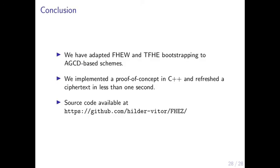Our bootstrapping procedure works as follows: we start with an AGCD encryption of m with large noise, use the mixed homomorphic multiplication of our GSW-like scheme to switch the modulus from p to n and perform reduction mod n, obtaining an R-AGCD encryption of a power of y. Then we apply the functional key switching procedure to transform this into a base scheme encryption of m with small noise. We adapted this bootstrapping framework from FHEW and TFHE to FHE over the integers, implemented a proof of concept in C++, and showed that bootstrapping can also be performed in less than one second. The source code is available on GitHub.